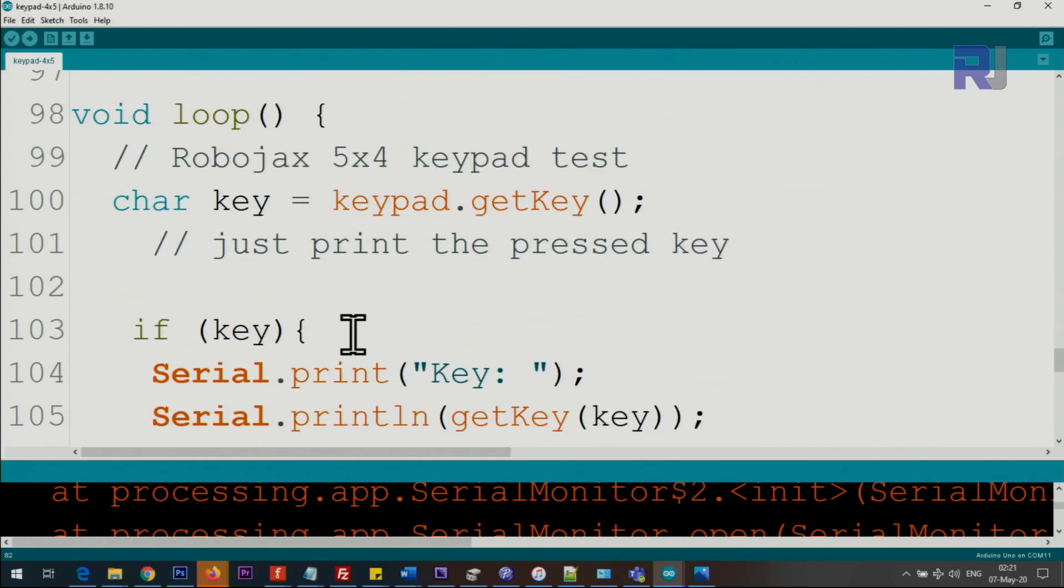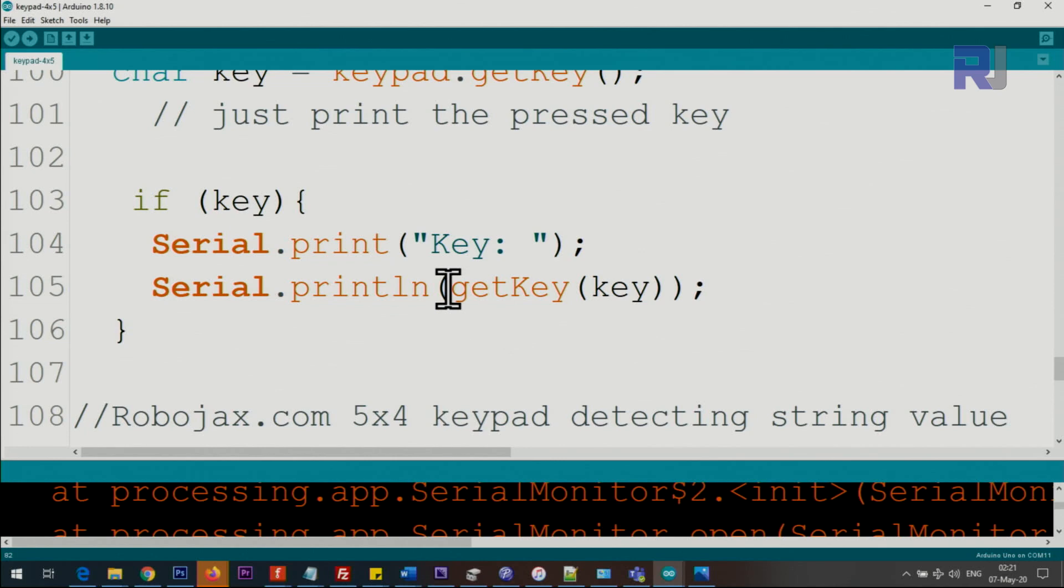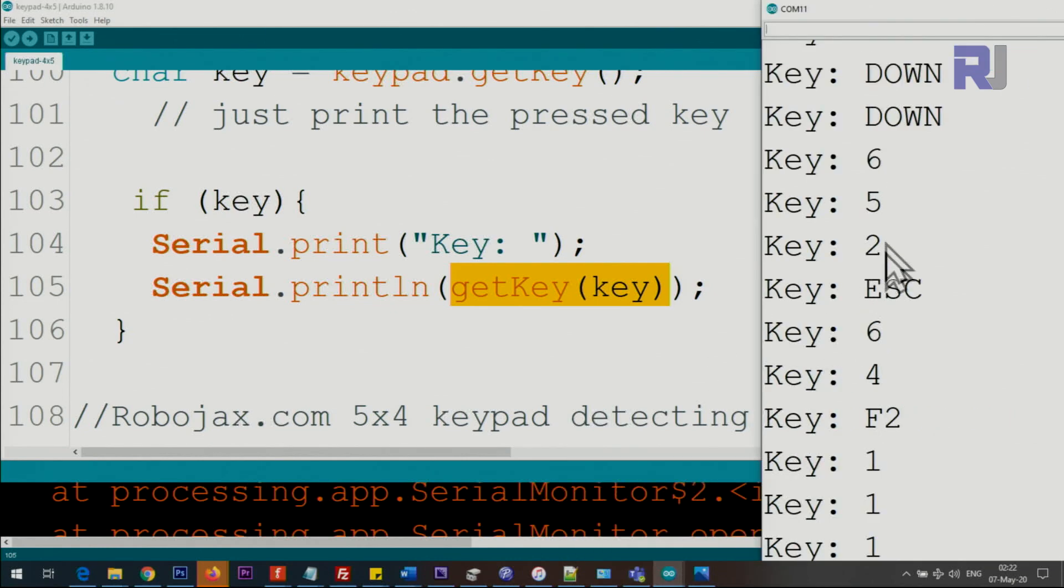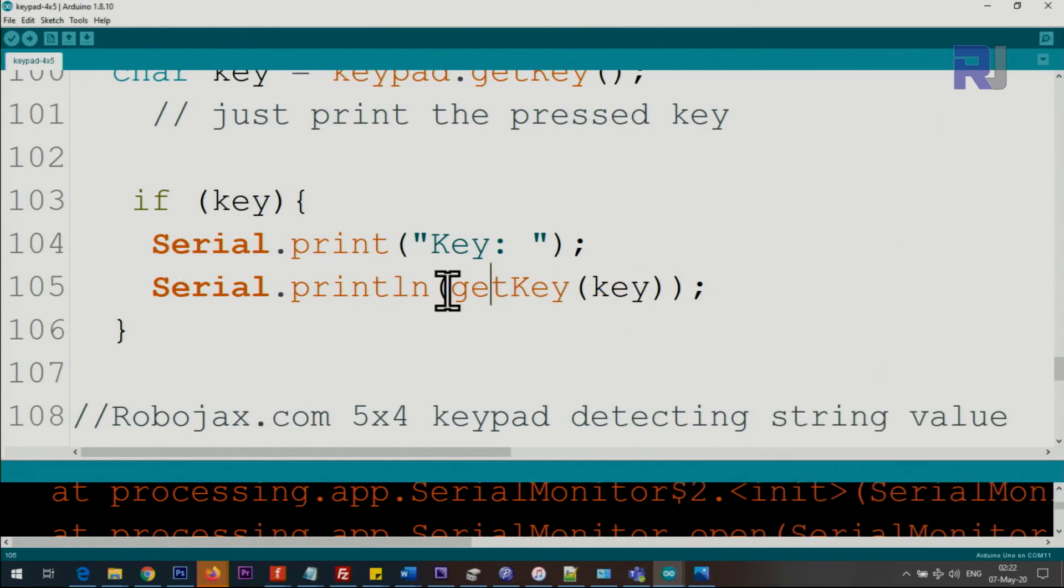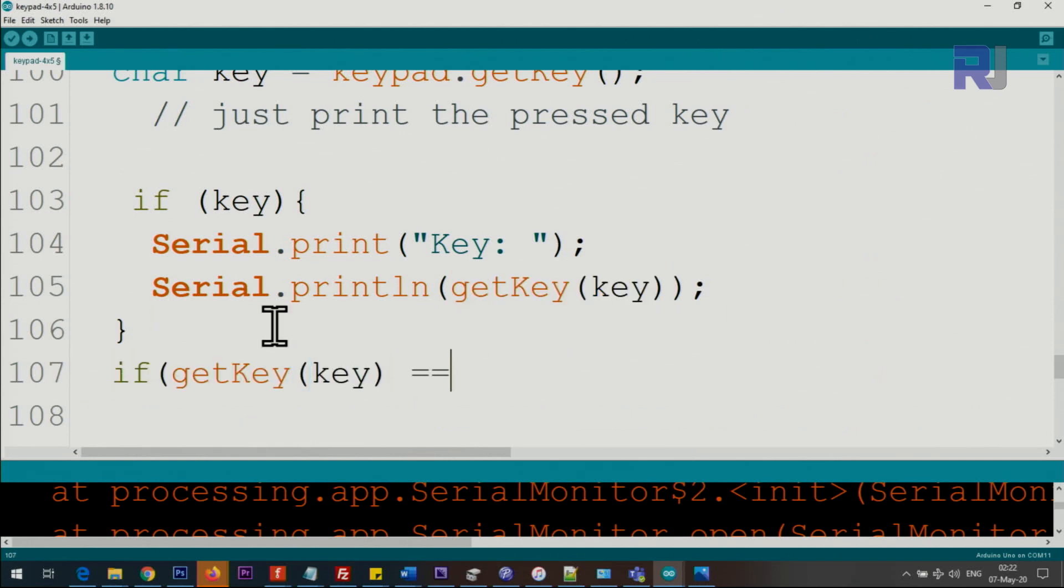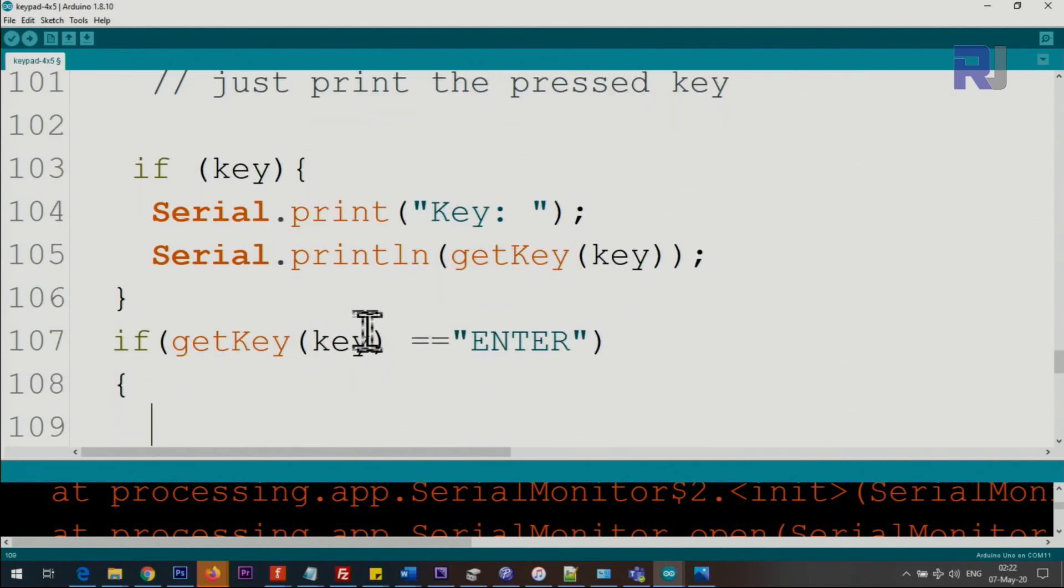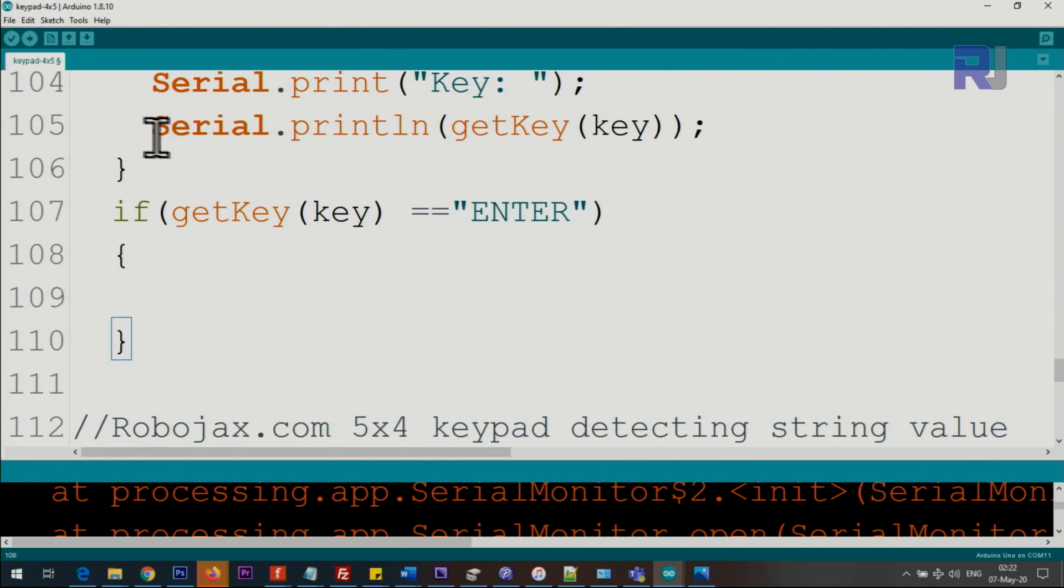Here inside the code, if you want to use it, this is the code that detects if the key is pressed. This is the key that is printing on the serial monitor. And here if you want to do something when the key is pressed, you can do it like this: if key is equal, let's say enter, if key is pressed, do something in between.